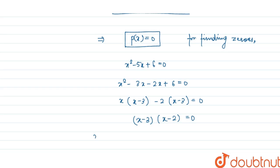So now from here, just equate each part equal to 0. From here we find x is equal to 3, and from x minus 2 part we find x is equal to 2. So these are the two zeros of quadratic polynomial.